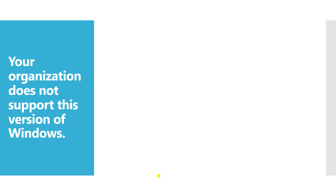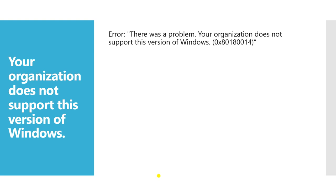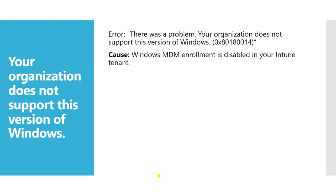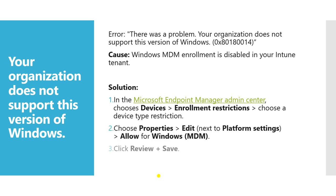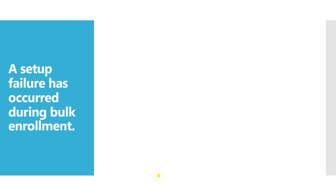Sometimes you get the error 'Your organization does not support this Windows version.' This means Windows enrollment is disabled in your Intune tenant. You need to go to Device Enrollment Restrictions, enable it, edit, and save it.